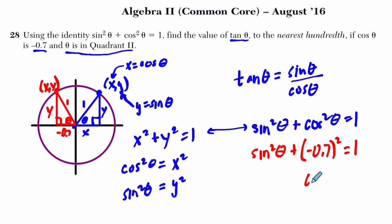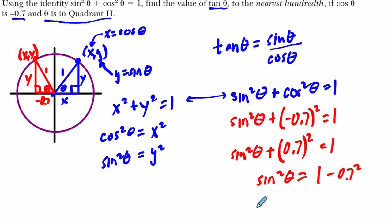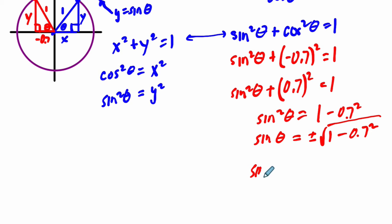But if we can find that, we can then find the tangent, because we have the cosine of theta. So sine squared theta plus cosine squared theta, well that's just negative 0.7 squared. That equals 1. So I'm trying to solve for the sine squared of theta. When I square a negative, this is going to be the same thing as 0.7 squared.